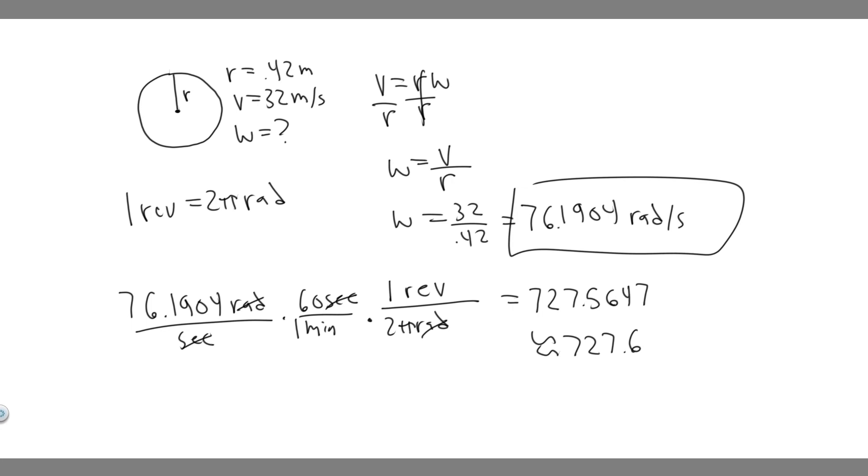I'm just going to round to 727.6, and this is going to be in revolutions per minute. So revolutions per minute, that's going to be the answer. 727.6 revolutions per minute, that's your answer to the second part. And this is the first part. So yeah, these are your answers, and hopefully you found this useful.